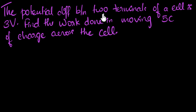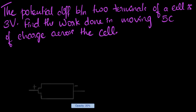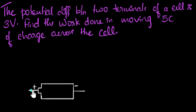The potential difference between the two terminals of a cell is three volts. Find the work done in moving five coulombs of charge across the cell. Let's see what's given to us — we have a cell, and across the terminals of the cell, the potential difference is three volts.